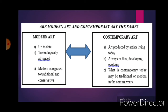Now we will differentiate modern art from contemporary art. For modern art, it is up-to-date, technologically advanced, and modern as opposed to tradition and conservative. While contemporary art is art produced by artists living today — always in flux, developing, and evolving. What is contemporary art today may become traditional or modern in the coming years. That is the difference between the two.